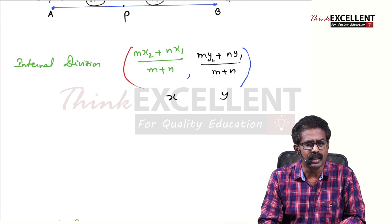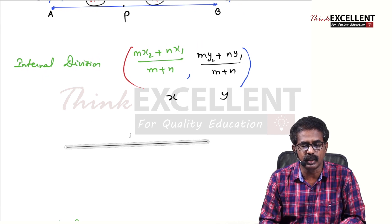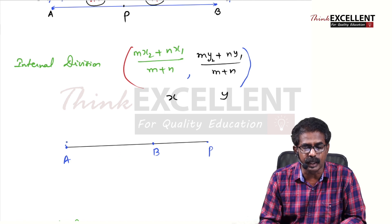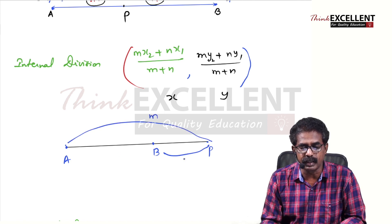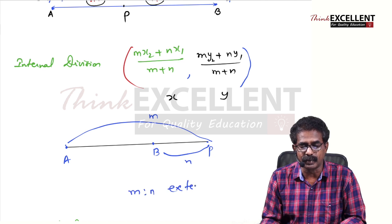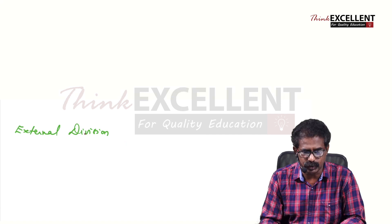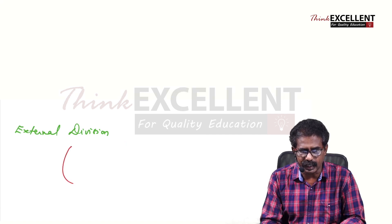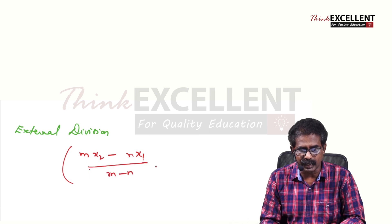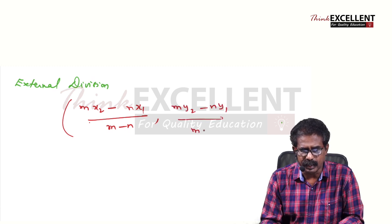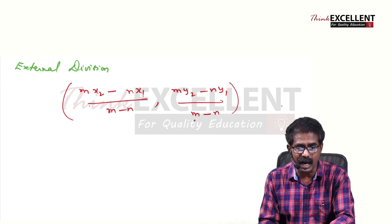For external division, as I said earlier, if the point lies outside — taking two points A and B, when you extend you get a point P. P divides AB in the ratio M is to N externally. The formula is the same, but instead of plus you write minus. So M into X2 minus N into X1 by M minus N. Same way for Y coordinate: M Y2 minus N Y1 by M minus N. So this is for internal and external division.